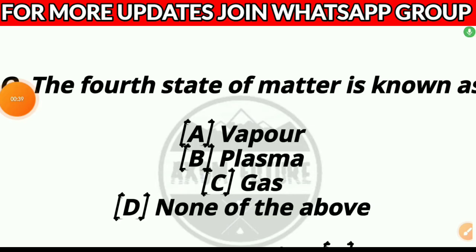Question 2. The fourth state of matter is known as: Option A, pepper; Option B, plasma; Option C, gas; or Option D, none of the above. Answer: Option B, plasma.